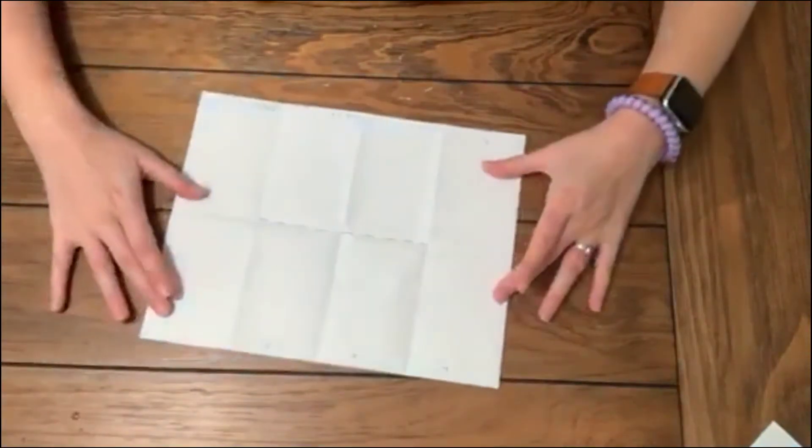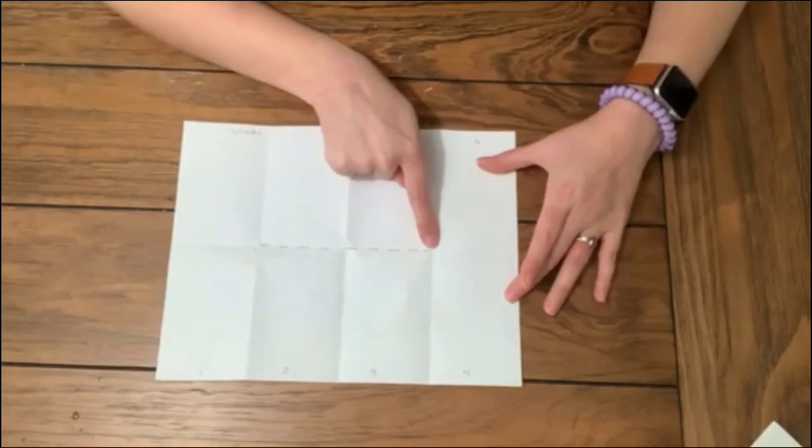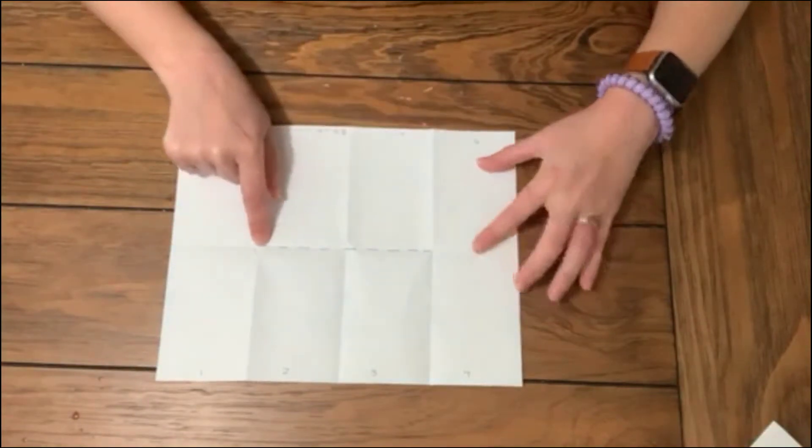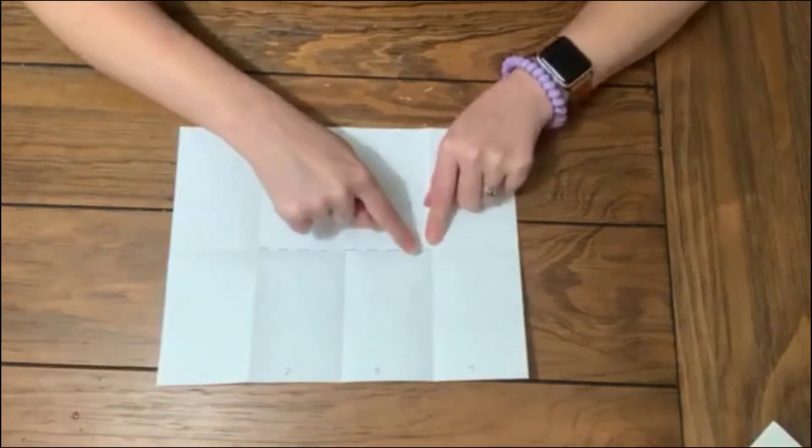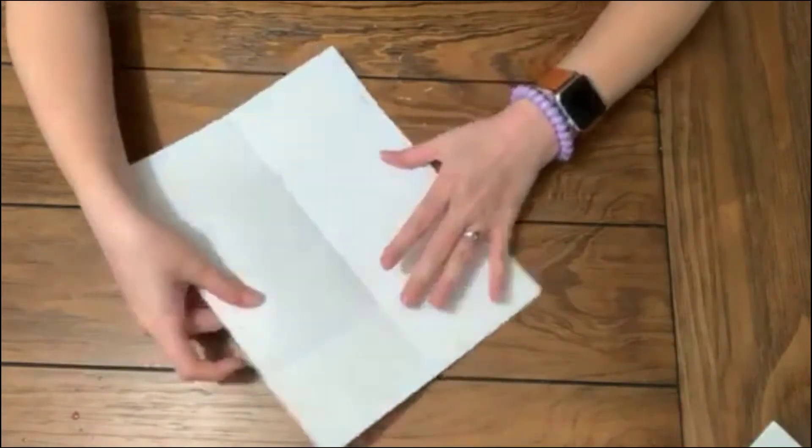And now for demonstration purposes, I'll show you what the layout looks like. In the middle area right here, you can see these dotted lines. So you're going to want to cut along this line so that it folds into a booklet. I'm going to show you how that works.